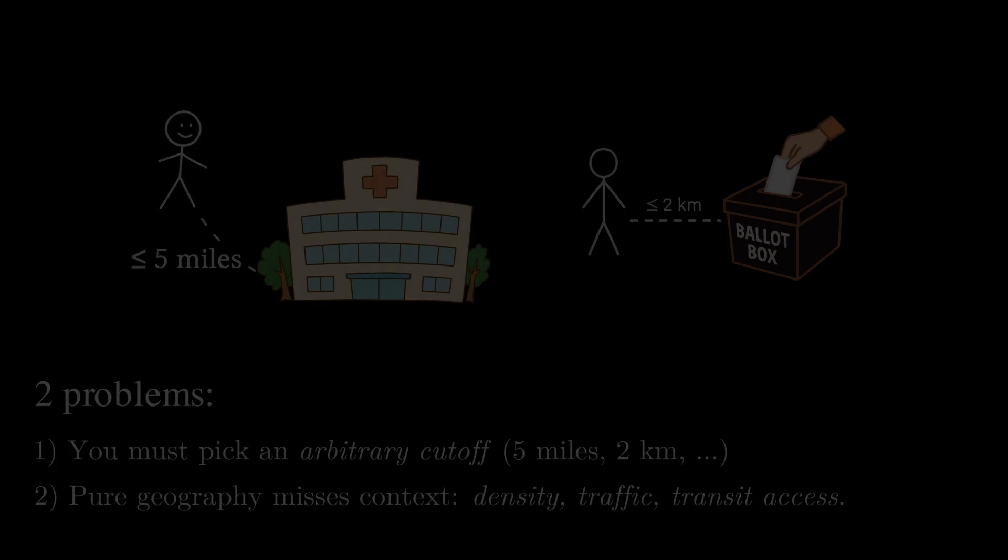But before we dive into the method, we need a way to represent our data. That's where simplicial complexes come in. Think of polling sites as a bunch of points, what mathematicians call a point cloud. Each point is a zero simplex.